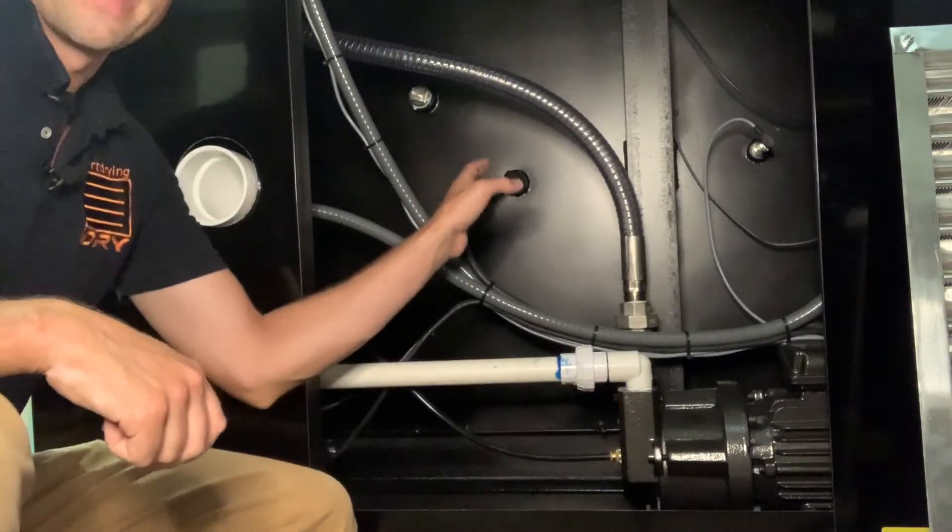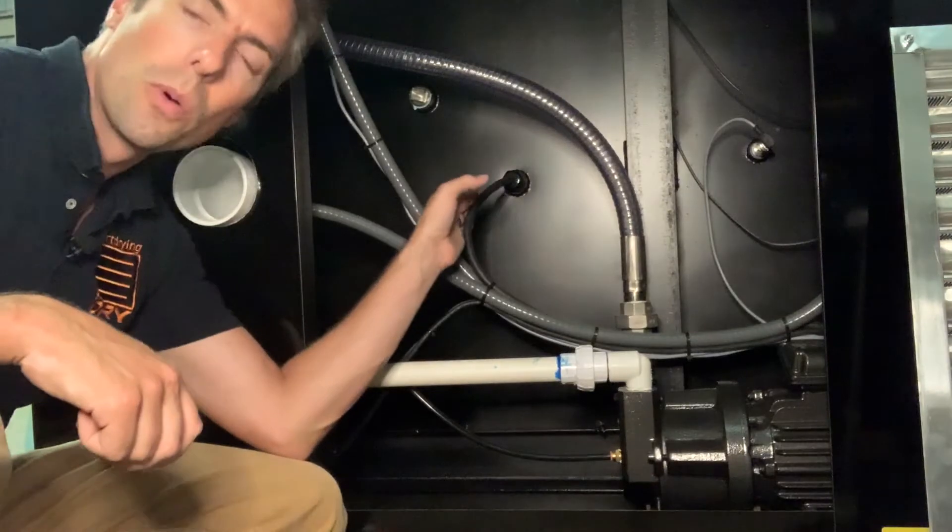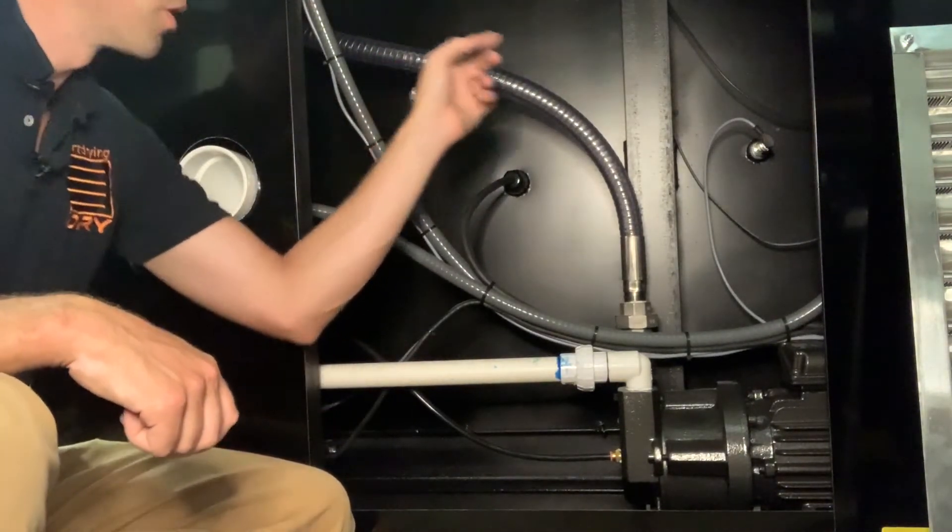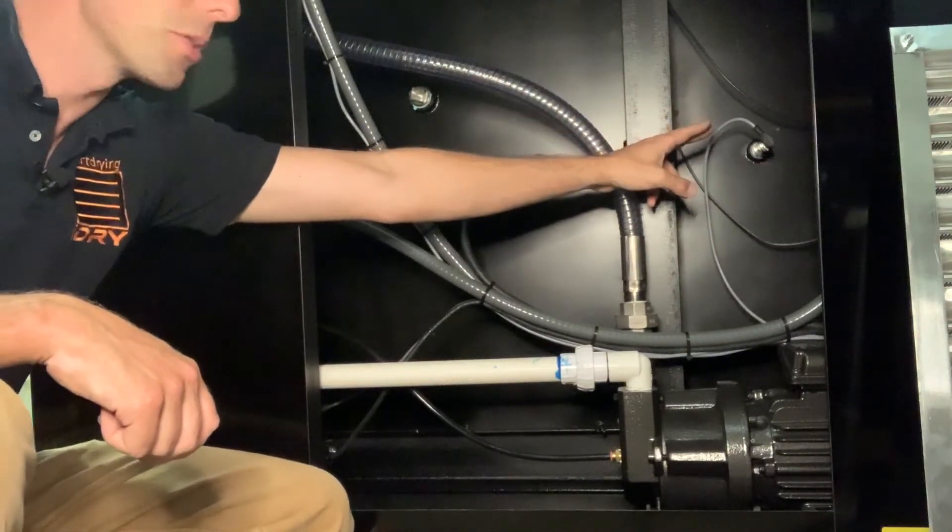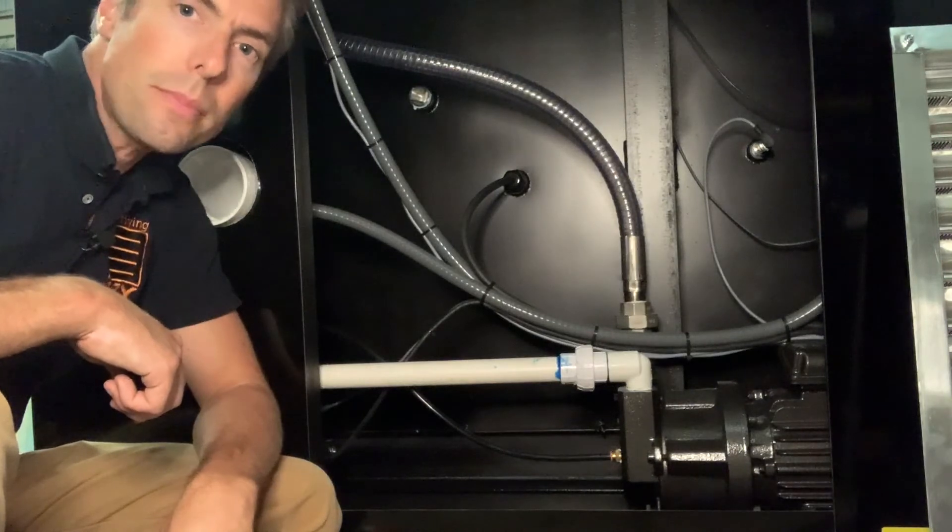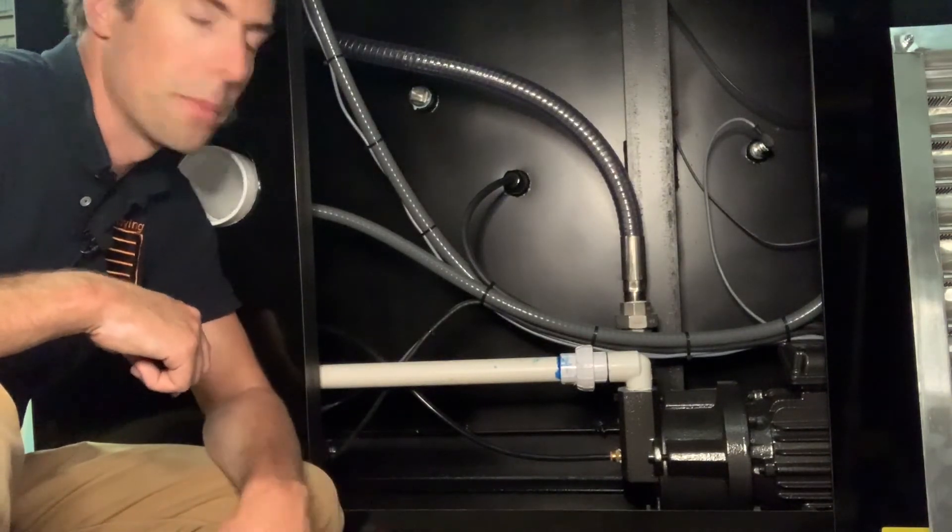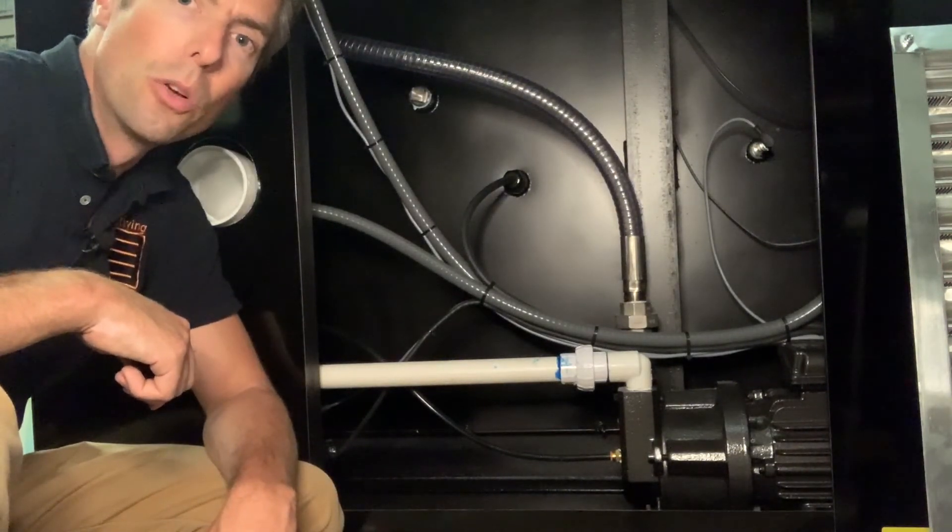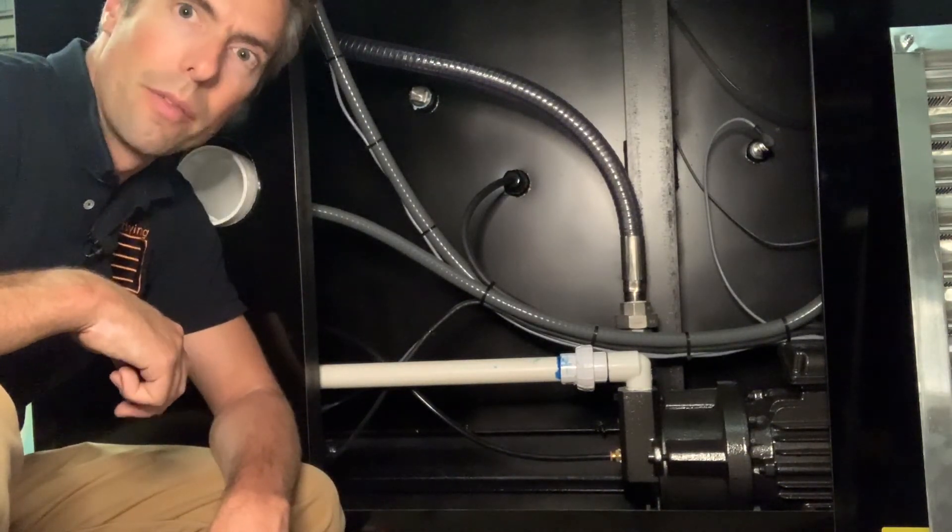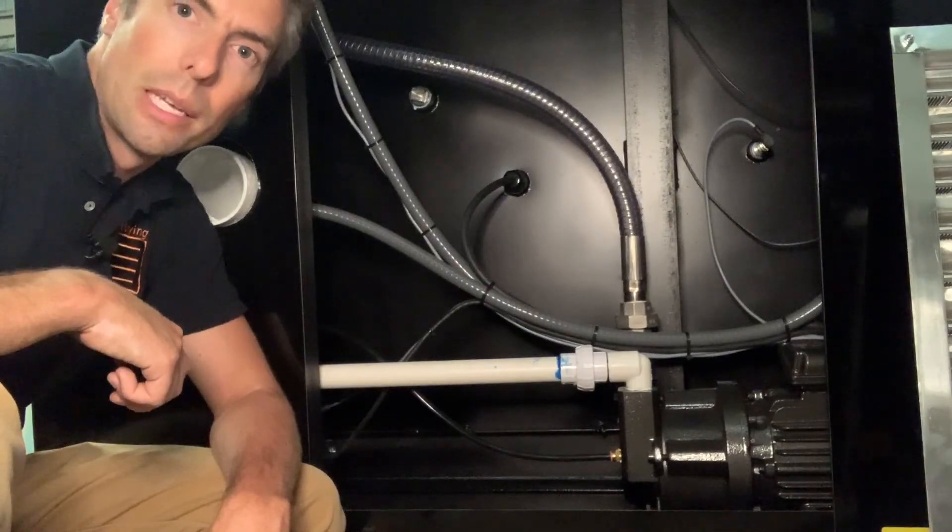We also have back here connections for the fan motor, which is inside the kiln. Different RTD sensors for temperature sensing. And we have the electric heating elements back here as well. All really easily accessible once you remove those louvers, but none of which requires much maintenance or work, but it is easily accessible.